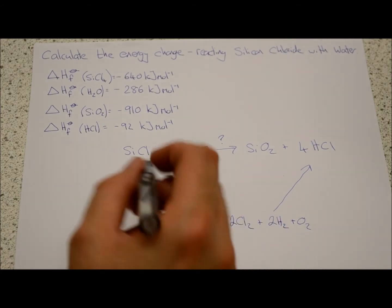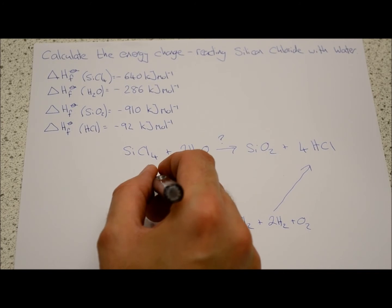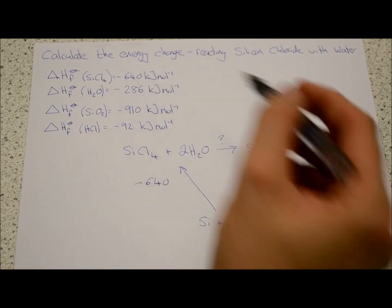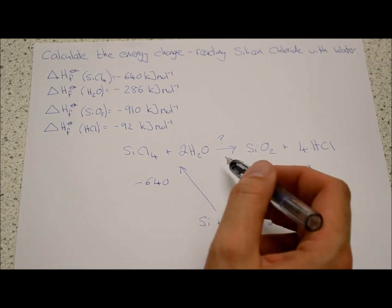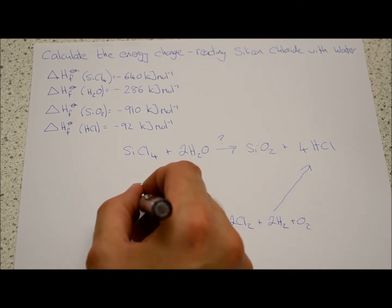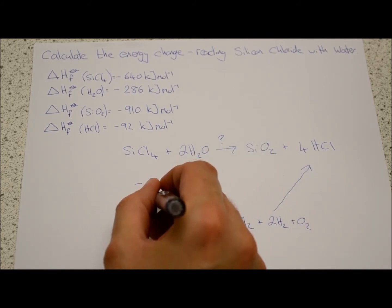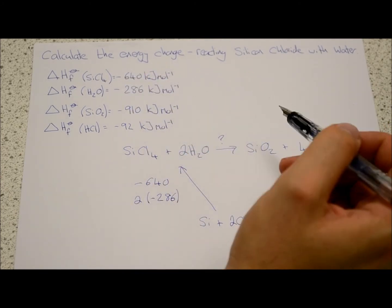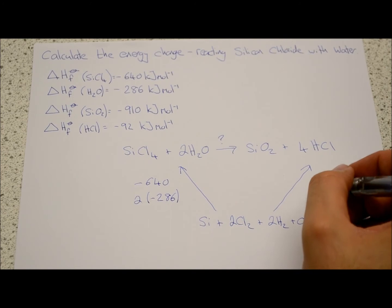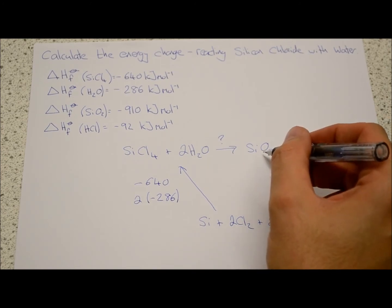So for this one, we're going to make one mole of silicon chloride, so that's going to be minus six forty from the table at the top. We're also going to make two moles of water, so this is where we have to incorporate the stoichiometry. There are two lots of minus two eight six from this table.